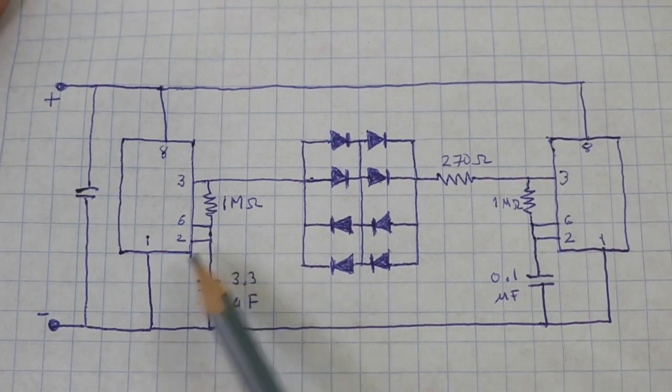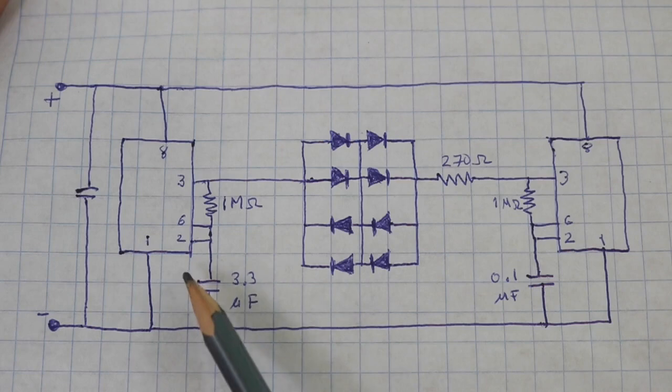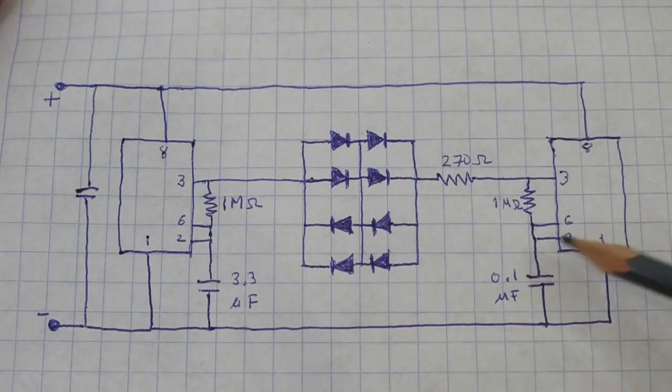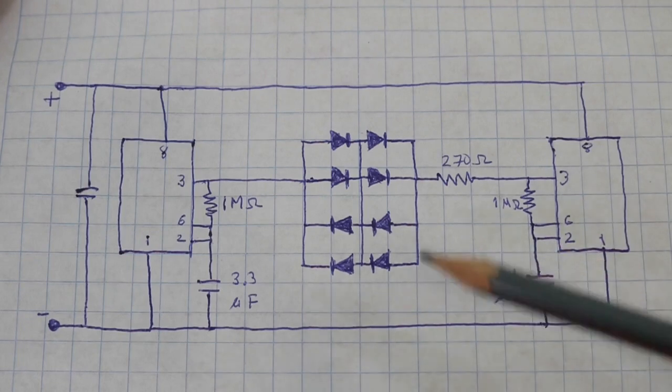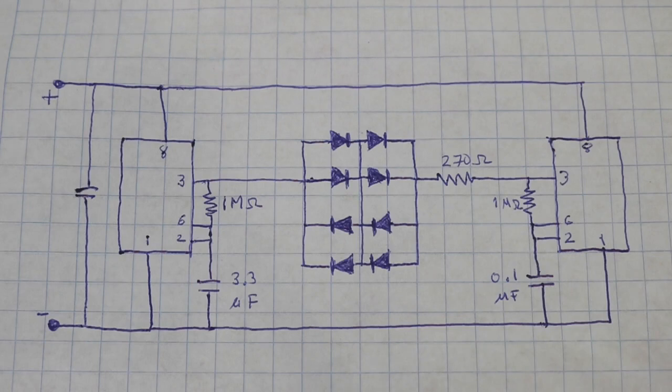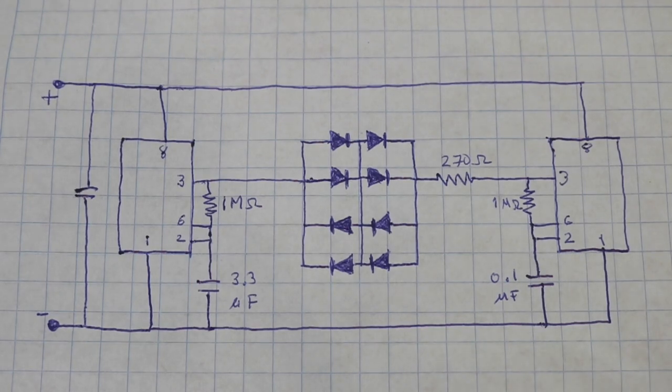So the first timer gives the alternance between one color and the other, and the second one produces the fast rate of pulses. So let's now see the circuit in action.